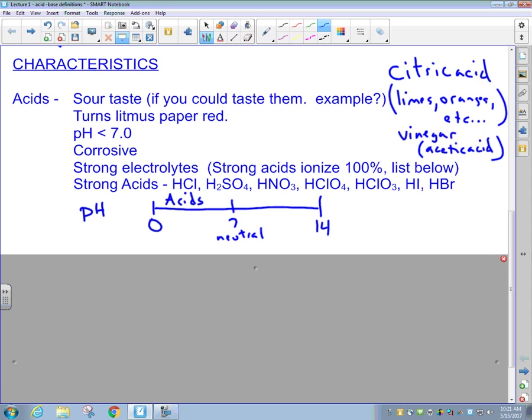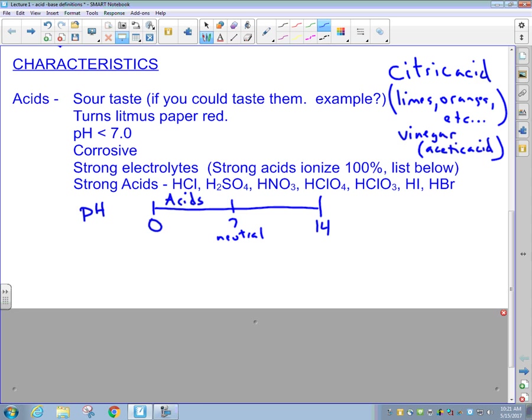Now we have the second part of that says strong acids ionize 100% and the list below. One of the few things you need to commit to memory in your chemistry course this year is the list of strong acids. You will handle the various problems that we have this unit in different ways based on whether or not you have what is called a strong acid or a weak acid. So the strong acids are listed right there. You have HCl, H2SO4, HNO3, HClO4, HClO3, HI, and HBr. Please commit that list to memory.